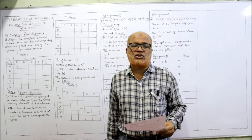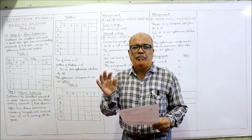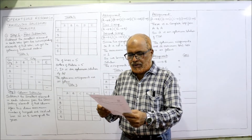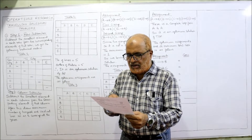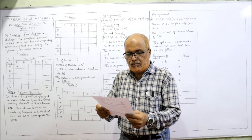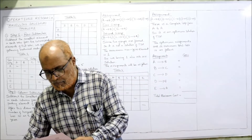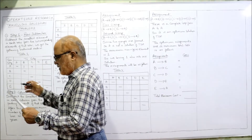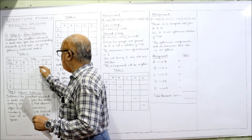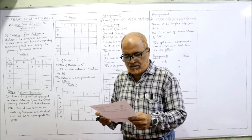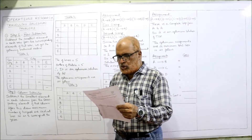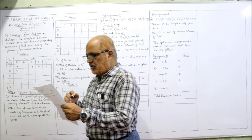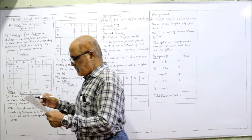First step: row subtraction. Row subtraction means subtracting the minimum element in each row from every element of that row. First row: the values are dash, 12, 15, 17, 11 — the minimum is 11. So 12 minus 11 is 1, 15 minus 11 is 4, 17 minus 11 is 6, 11 minus 11 is 0. First row completed. Second row: 16, 13, 18, 12 — minimum is 12. So 16 minus 12 is 4, 13 minus 12 is 1, 18 minus 12 is 6, 12 minus 12 is 0.